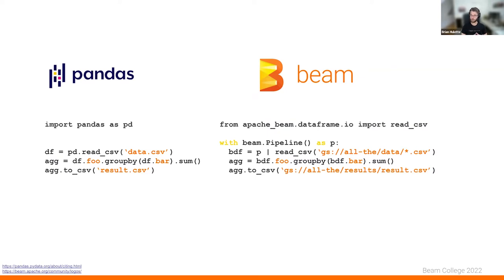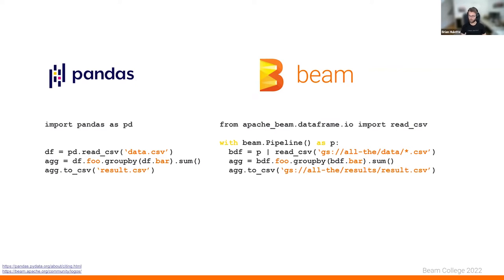With Beam things look mostly the same but with a little difference. We do a different import — from Beam instead of from pandas — and you work with a pipeline object, since everything in Beam is about building up a pipeline to run on a runner. Rather than reading and writing files on your local disk, we read and write files in cloud storage, because the Beam DataFrame API is designed to process large distributed datasets stored remotely.